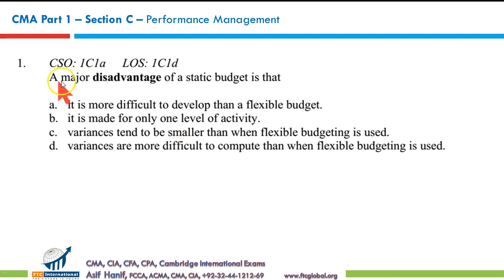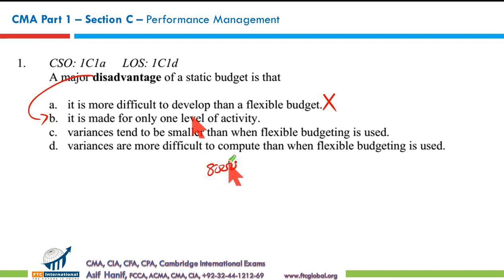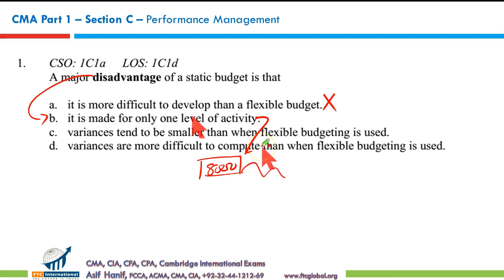The major disadvantage of a static budget: a static budget, as the name suggests, is stationary — it's not moving. The budget made for a specific level of activity is called a static budget. Option A says it is more difficult to develop — wrong. It is very easy to develop because you just have to develop the budget for a single level of activity. Option B says it is made for only one level of activity — yes, that is the major disadvantage. If you budgeted for 8,000 units and actually produce more or less, you have to revise it using flexible budgets.